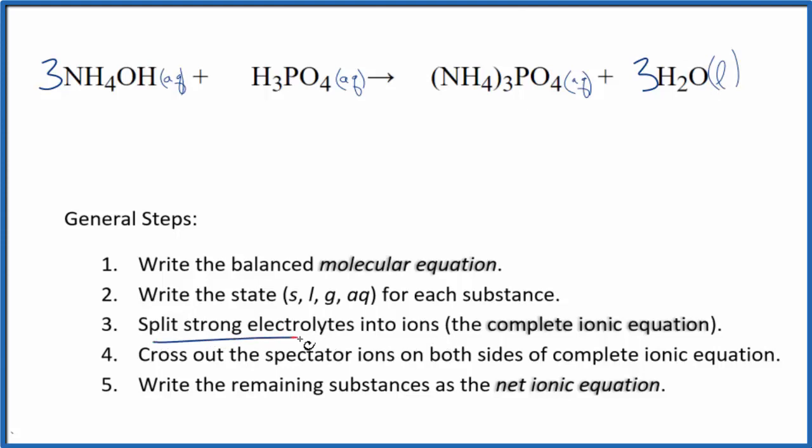Now we can split the electrolytes into their ions for the complete ionic equation. The ammonium ion here is one plus, the hydroxide ion is one minus. So I have three ammonium ions, and I won't write the states right now. Let's write those at the end. And then three of these hydroxide ions here.